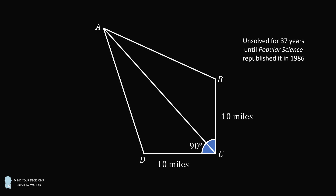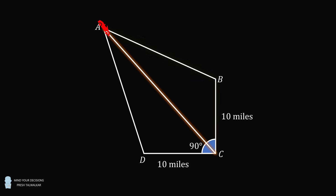So here is how the puzzle goes. You have a quadrilateral ABCD. Angle C is a 90 degree right angle, and CB is equal to CD is equal to 10 miles. Imagine there's a car starting at the point A. We are going to consider three paths it can take to get to C: going directly A to C, A to B to C, and A to D to C.